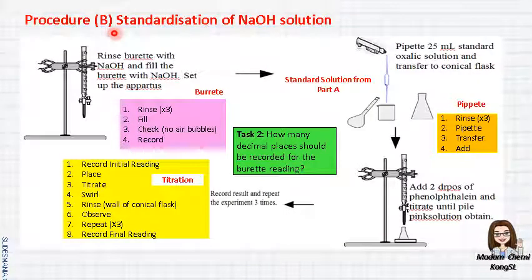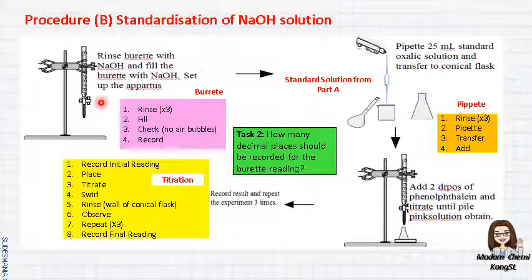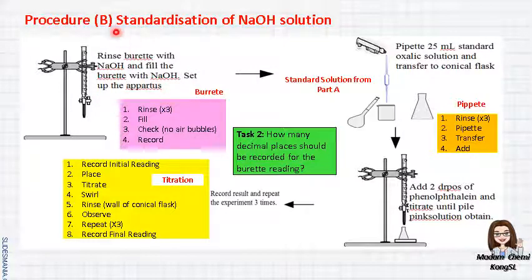Next, Procedure B: Standardization of sodium hydroxide solution. For this part there are 10 steps from the lab manual, so I have summarized the steps for you. First, make sure that you rinse the burette with three solutions: first tap water, then distilled water, and then the third one is sodium hydroxide. After that, fill the sodium hydroxide inside the burette.